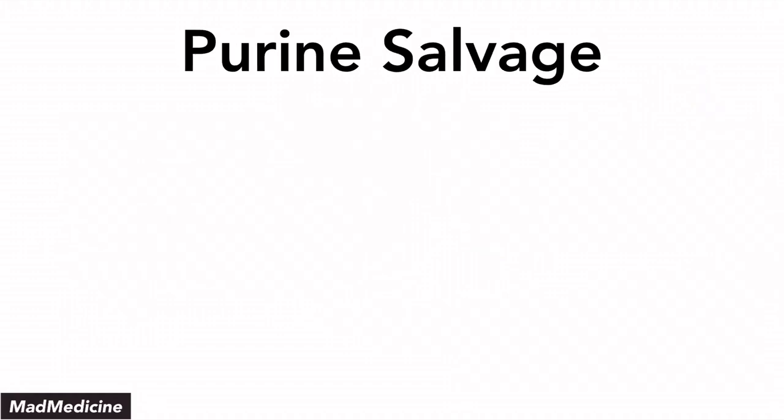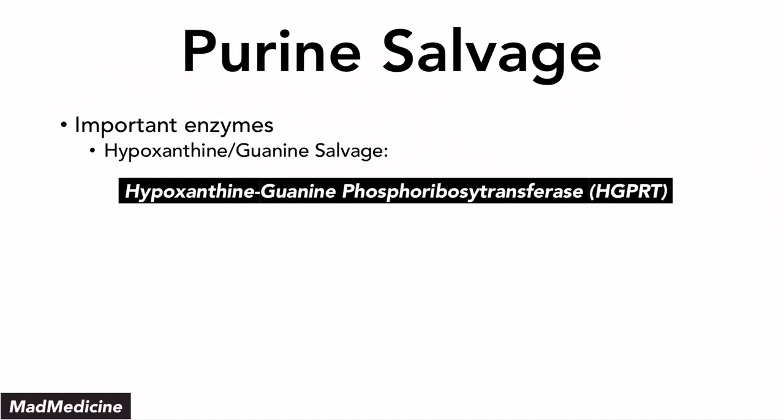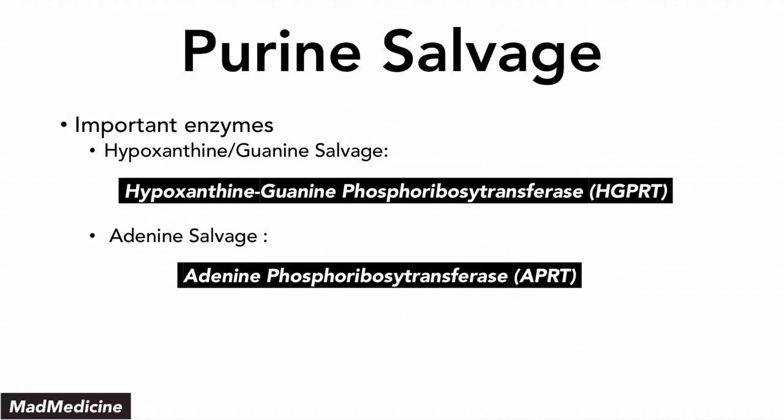When it comes to salvaging purines, there are several important enzymes you need to know. You have adenine, guanine, and hypoxanthine as the different types of purines. When it comes to specific purines, you're going to have very specific enzymes associated with salvaging them. For hypoxanthine and guanine, you're going to have an enzyme called hypoxanthine-guanine phosphoribosyltransferase, or HGPRT. And then for adenine, you have adenine phosphoribosyltransferase, or APRT. You need to remember that you have HGPRT and APRT — these two enzymes are going to play a huge role in the salvaging of purines.